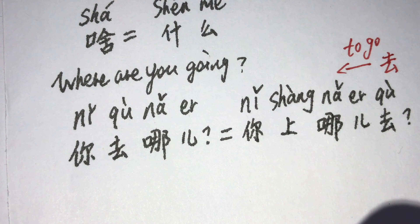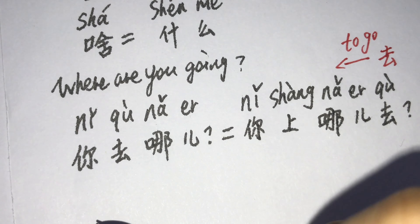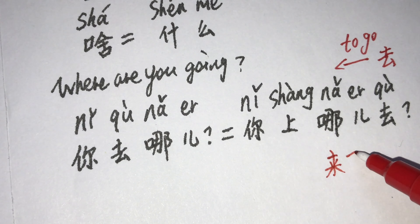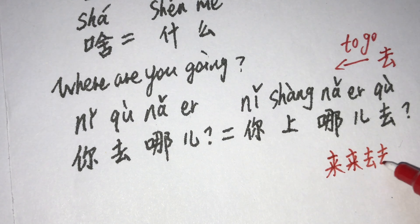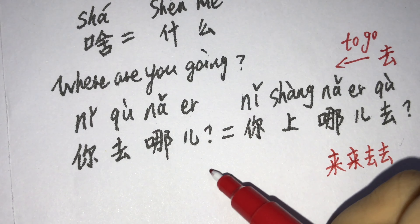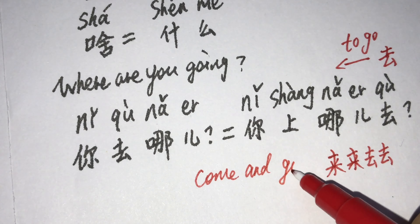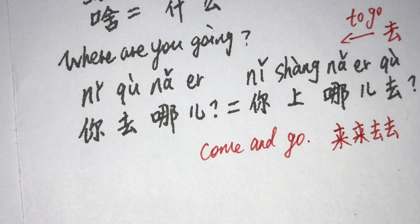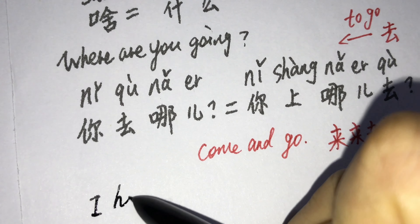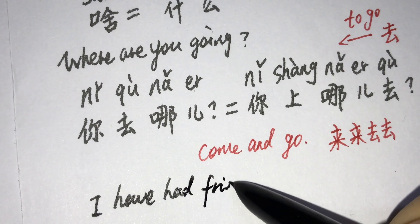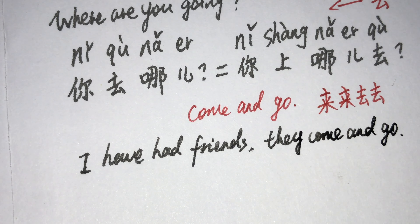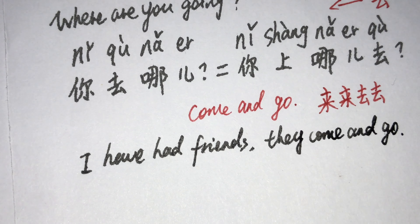Now here comes the four-character Chinese idiom: 来来去去. 来来去去. For example, I have had friends — they come and go.